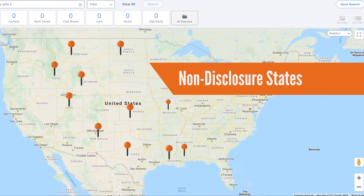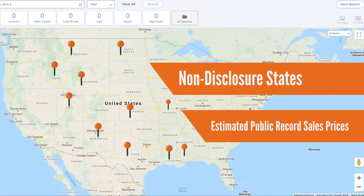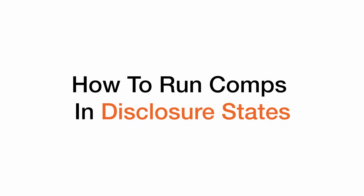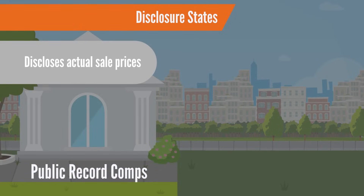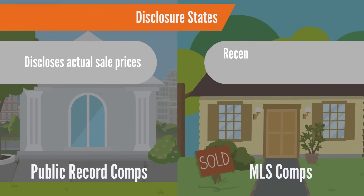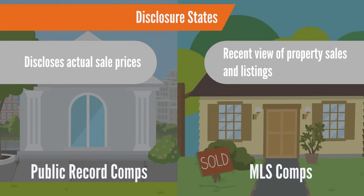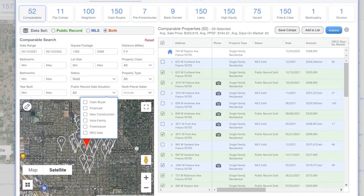Due to this, PropStream provides estimates for public record sales prices in non-disclosure states. In disclosure states, public record comps identify the actual sale price as reported in the county assessor's office. MLS data will allow you to utilize a more recent window of property sales and listings in the area. You have the ability to control the public record sales situations to include cash transactions, properties financed by a bank, and more.